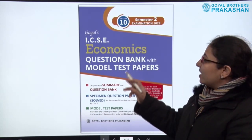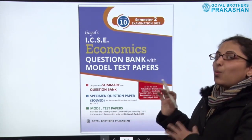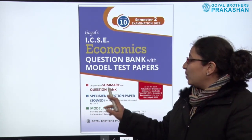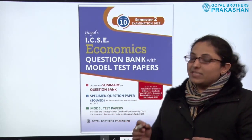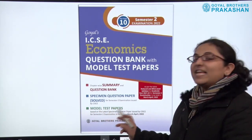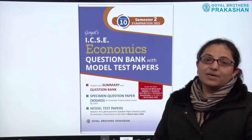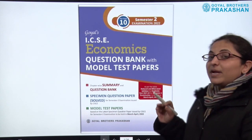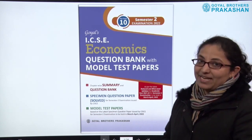This is the book for economics. This book is basically a question bank with model test papers. It has chapter-by-chapter summaries and a question bank. It also has the specimen question paper solved for semester two examinations issued by CISCE, along with unsolved model test papers based on the latest specimen question paper. This book follows the latest reduced and bifurcated syllabus for academic year 2021-22, semester two.